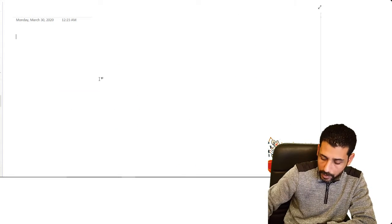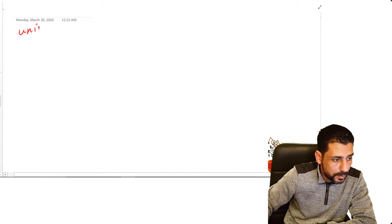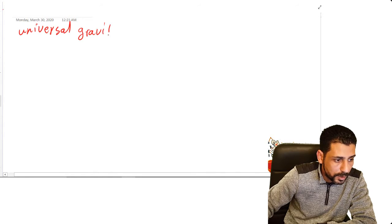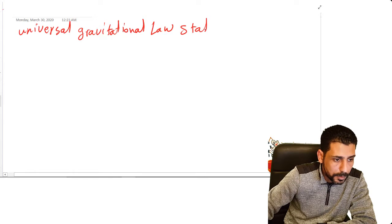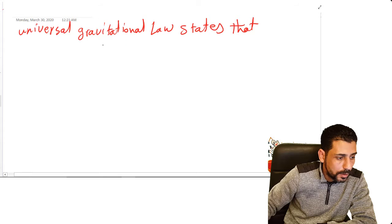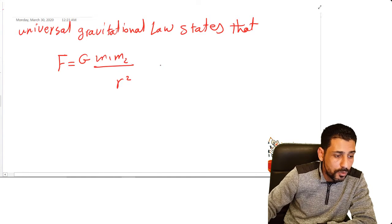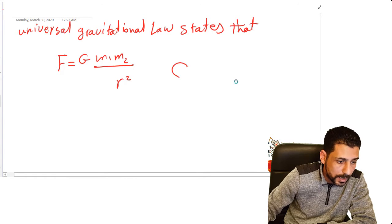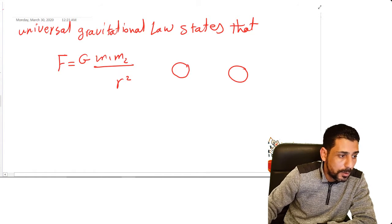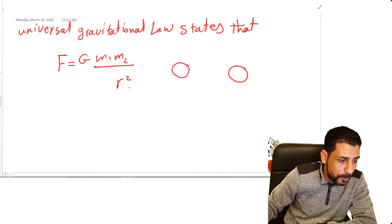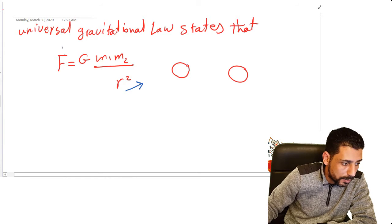This is called the Universal Gravitational Law because it applies to the entire universe. The Universal Gravitational Law states that the gravitational force between any two masses M1 and M2 is directly proportional to these two masses and inversely proportional to the distance squared.